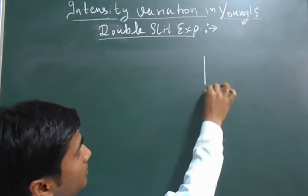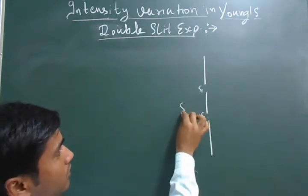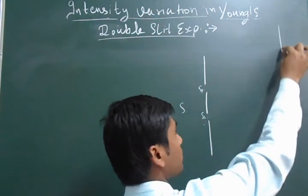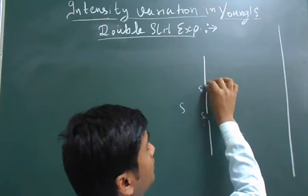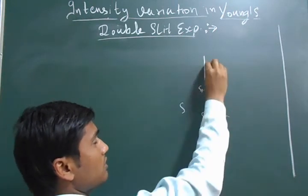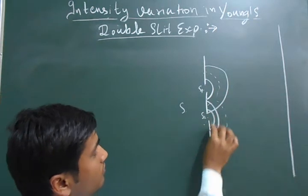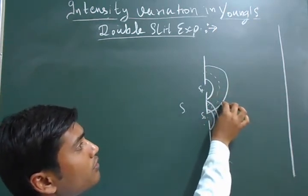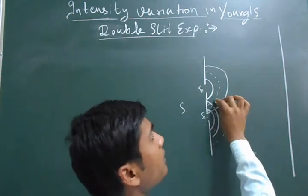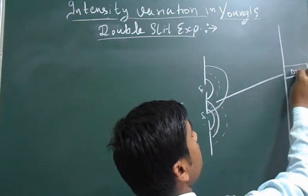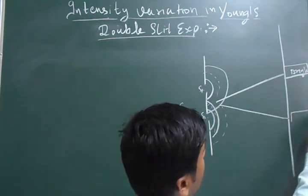In Young's double-slit experiment, we have two slits S1 and S2 as shown in the figure. The fringes are formed on a screen. When the same type of waves — crest to crest and trough to trough — are superimposed with each other, we get a bright fringe. When different types are superimposed with each other, we get a dark fringe.